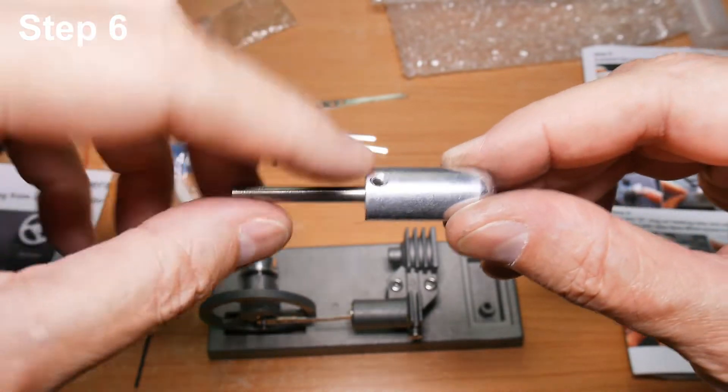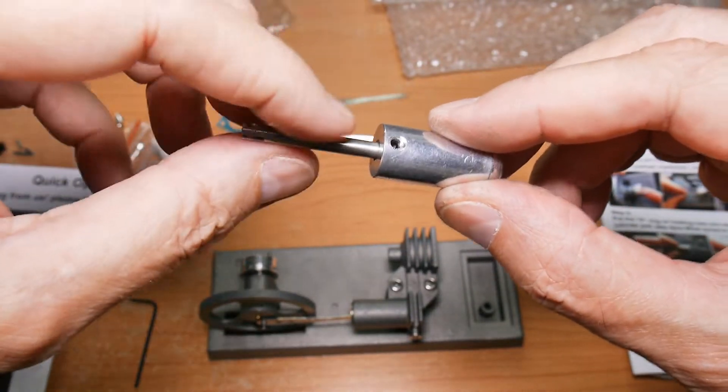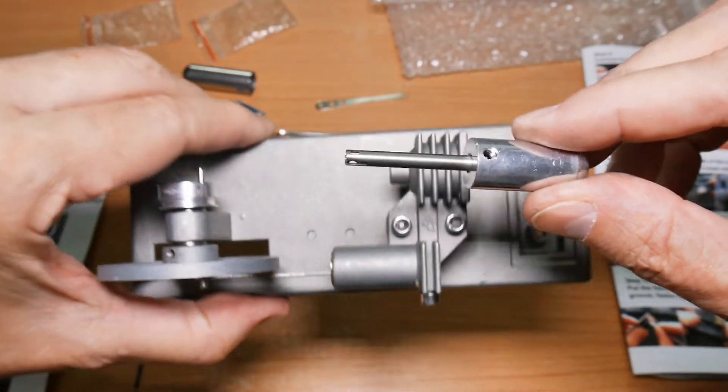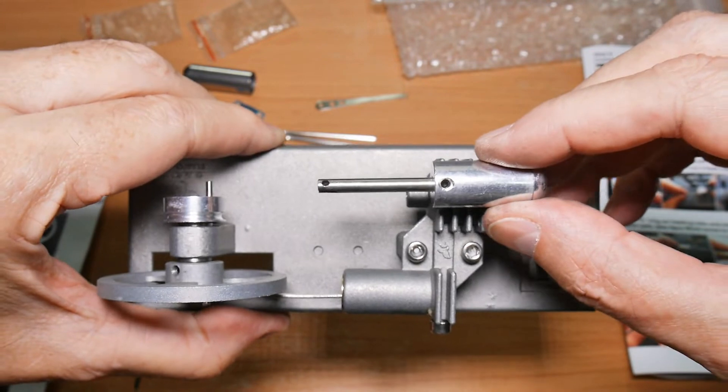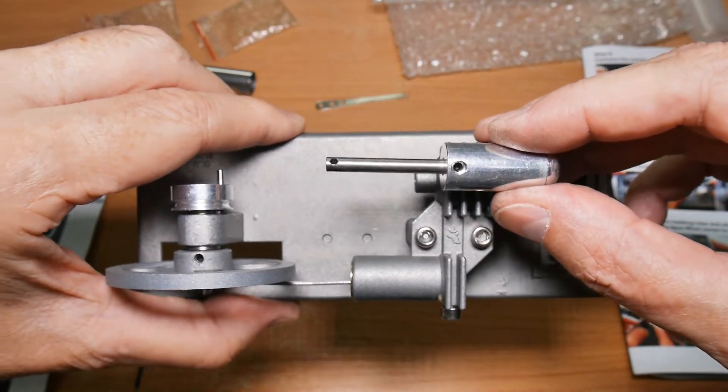This step was rather simple. It was just putting the set screw in here to fasten this connecting rod to this piston. Next, we're going to be putting this in here, and then put a connecting rod from this to this. But I'm getting ahead of myself.